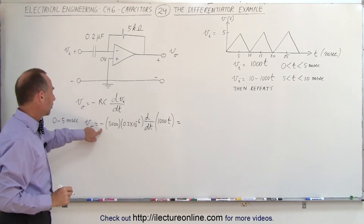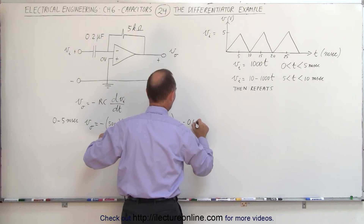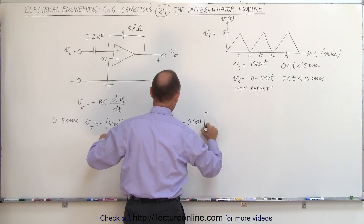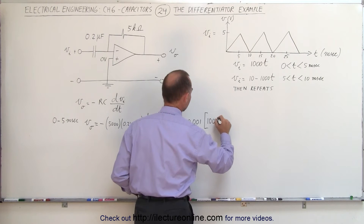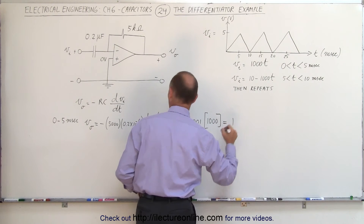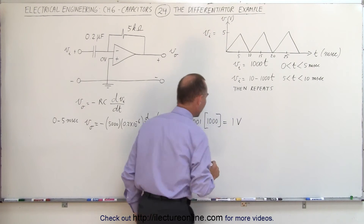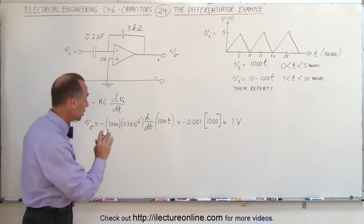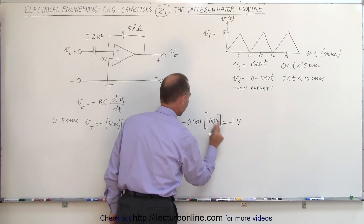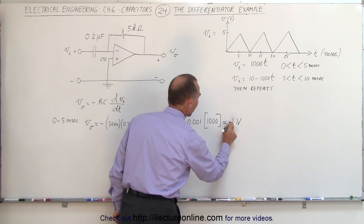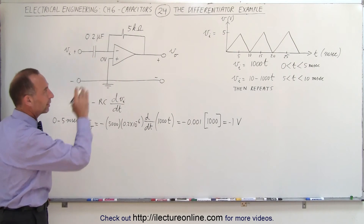This gives us negative 0.001 times the derivative of one thousand t, which is simply one thousand, giving us negative one — and the units are volts — so negative one volt. Don't forget the negative sign, so the output for the first five milliseconds is negative one volt.